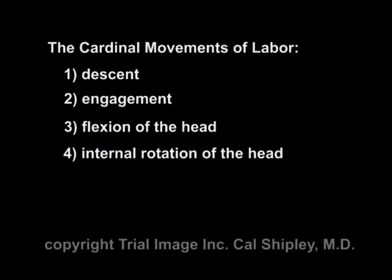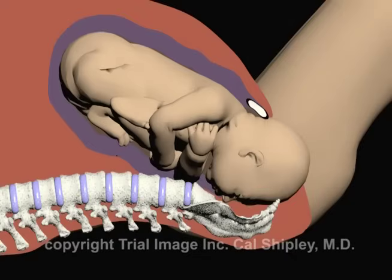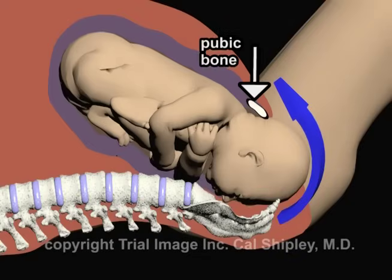The fifth cardinal movement is extension of the fetal head. Extension of the fetal head facilitates its movement beneath the mother's pubic bone and allows delivery of the head.